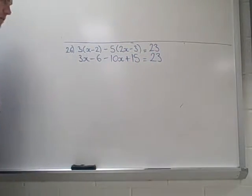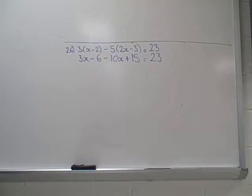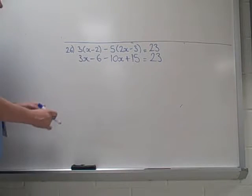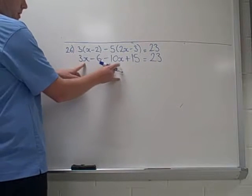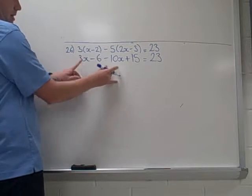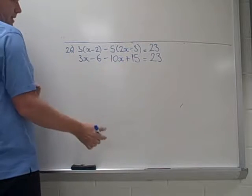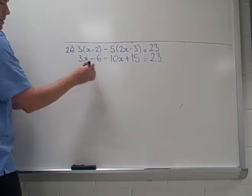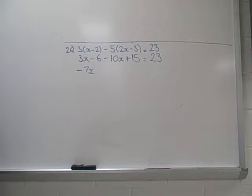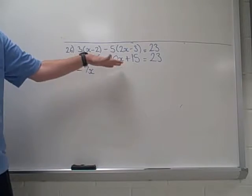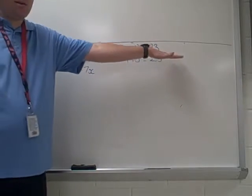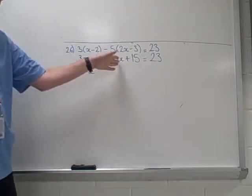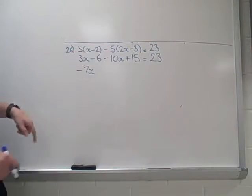Now before we start moving terms around, we're going to start combining terms — or moving terms to the other side as you'd say. So I've got 3x take away 10x here, so that's just negative 7x. Notice I'm not doing the opposite here, I'm not moving this to the other side of the equal sign, I'm just combining terms here.